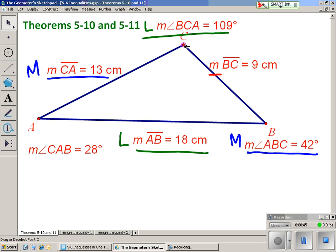Finally, segment BC is the shortest side length, and it's across from the smallest angle. And that relationship will always happen. That's kind of what theorems 5-10 and 5-11 say.